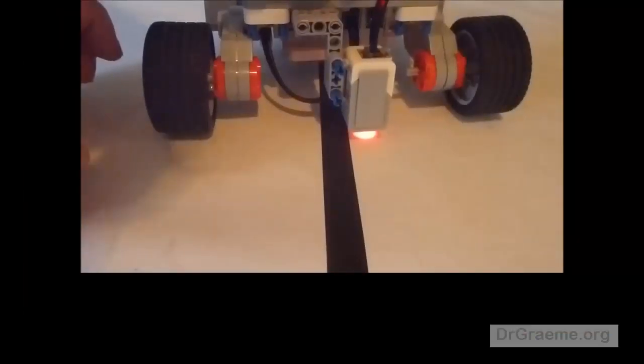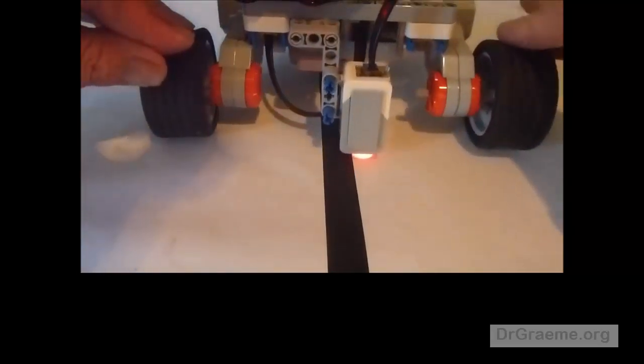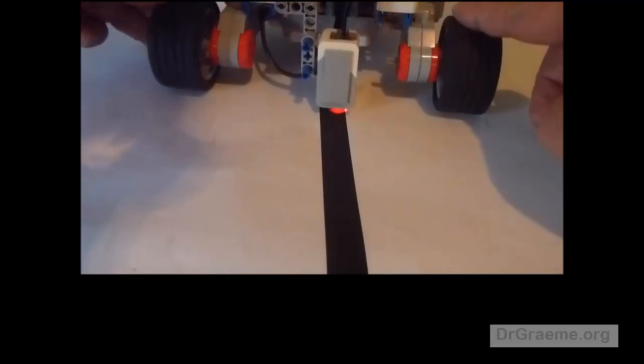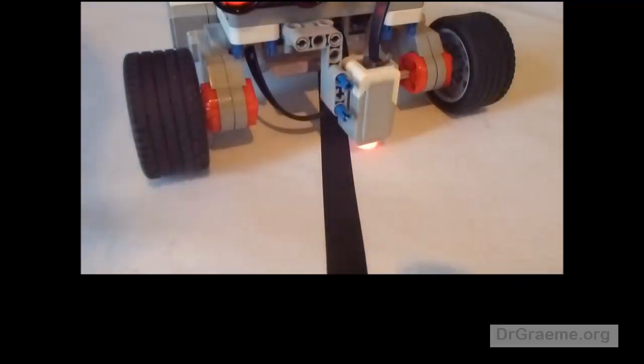If our robot moves so that the light under the color sensor changes from a light surface to a dark surface the reading will change. Or if it changes from the dark surface to the light surface we can follow the edge of a line like this.